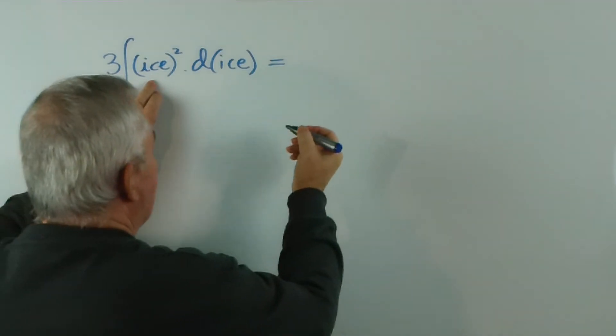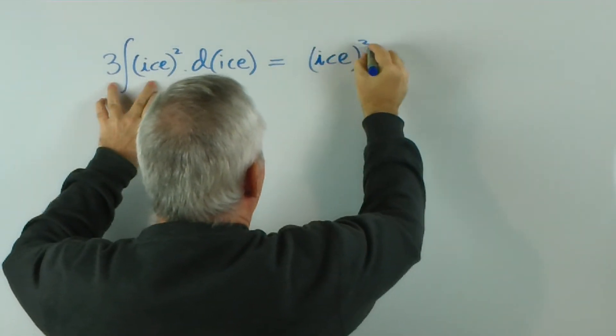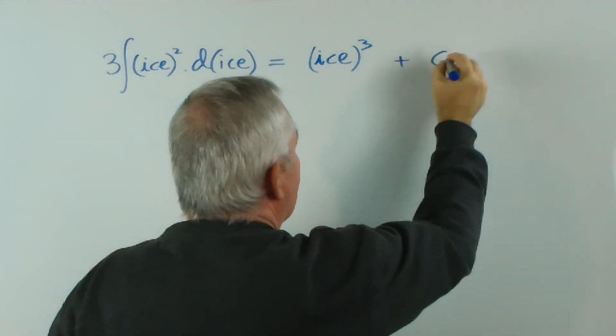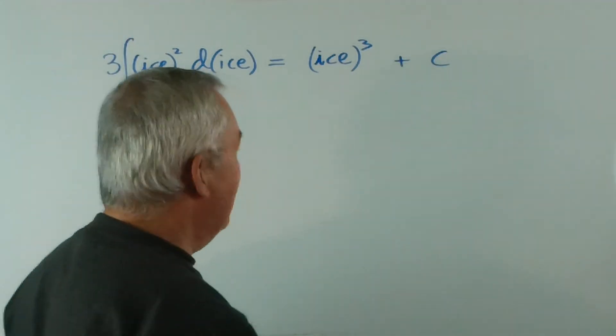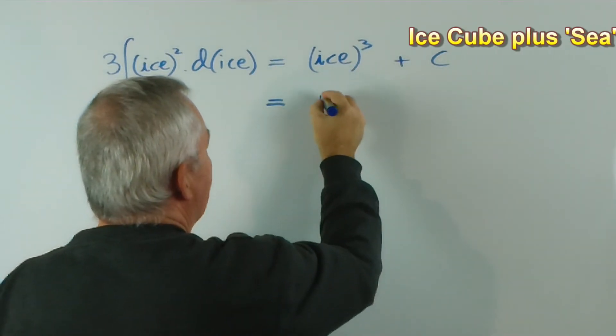And the integral of three ice squared is ice cubed. And since it's indefinite, plus c, you can see where this is heading, can't you? And an ice cubed plus c is an iceberg.